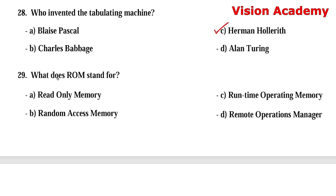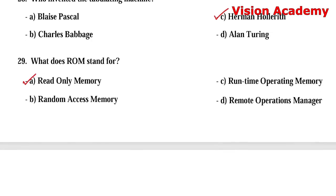Question number 29: What does ROM stand for? Option A: read-only memory. Option B: random access memory. Option C: runtime operating memory. Option D: remote operations manager. Option A, read-only memory, is the right answer.